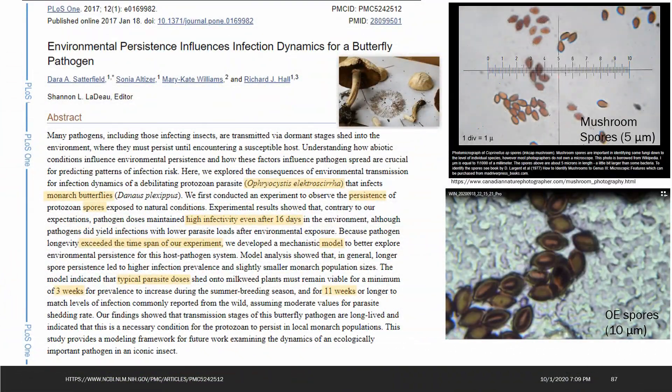Today I thought I'd share a review on this research paper about environmental persistence influences on infection dynamics for butterfly pathogen, which happens to be OE for monarch butterflies. This was published in 2017 by Dara Satterfield from the University of Georgia.